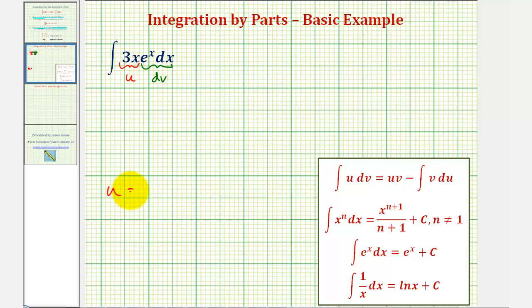So if we let u equal three x, then differential u would just be u prime times dx, or just three times dx. And if dv is equal to e to the x dx, we need to integrate both sides of this equation to find v. Let's go ahead and show that.